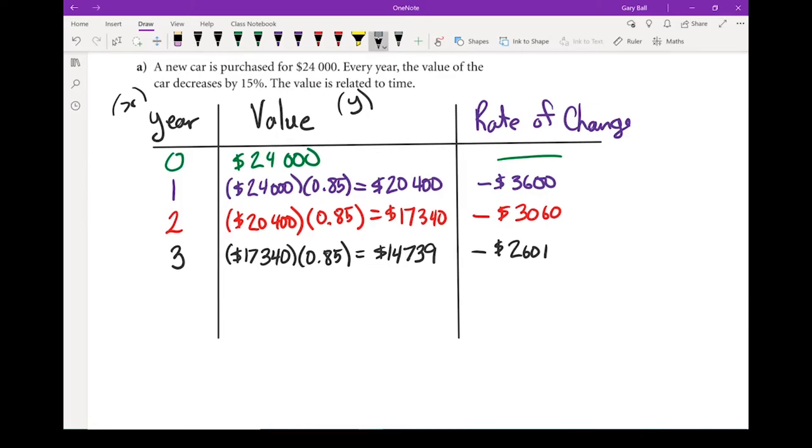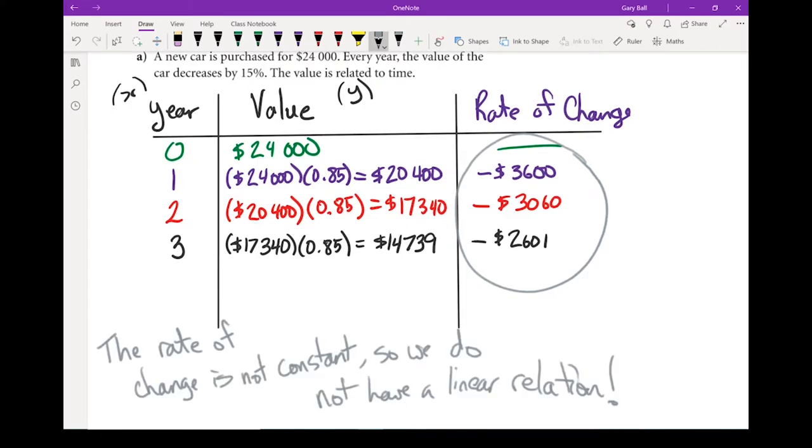In this question, you notice how the rate of change is not always the same amount. It changes as time goes on. As time goes on, the car starts losing less and less value. If that rate of change is not constant, we do not have a linear relation.